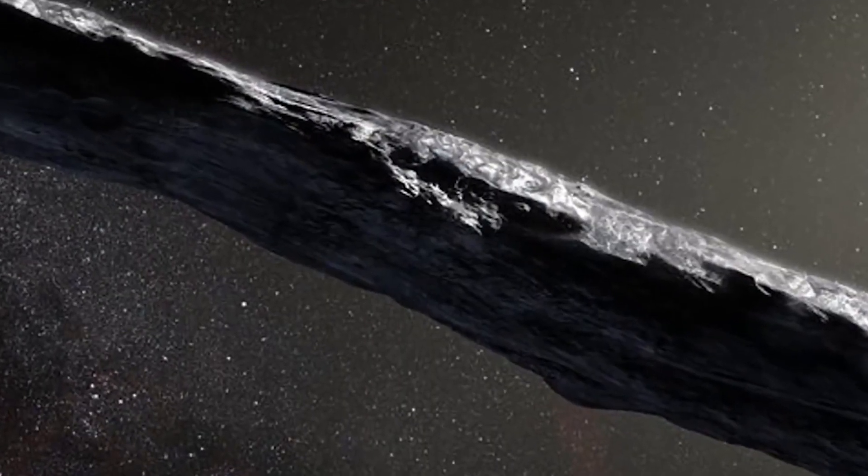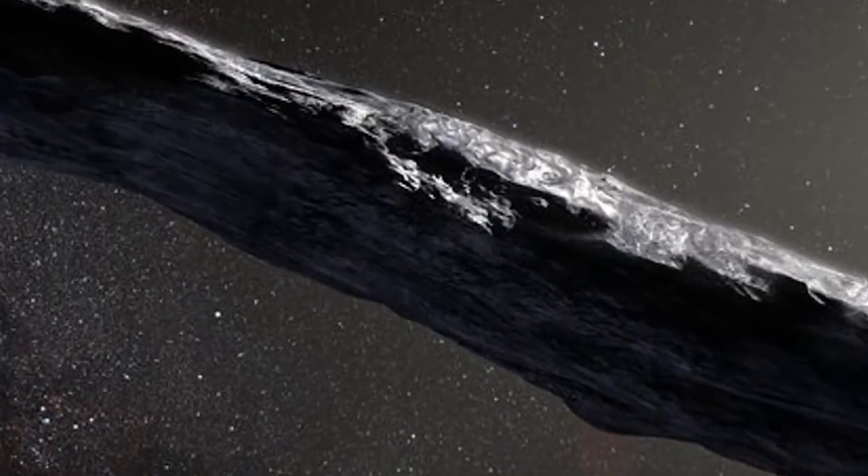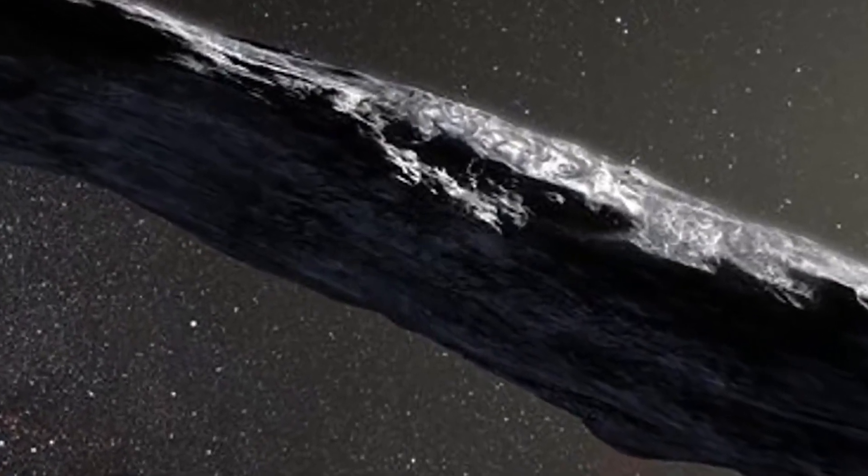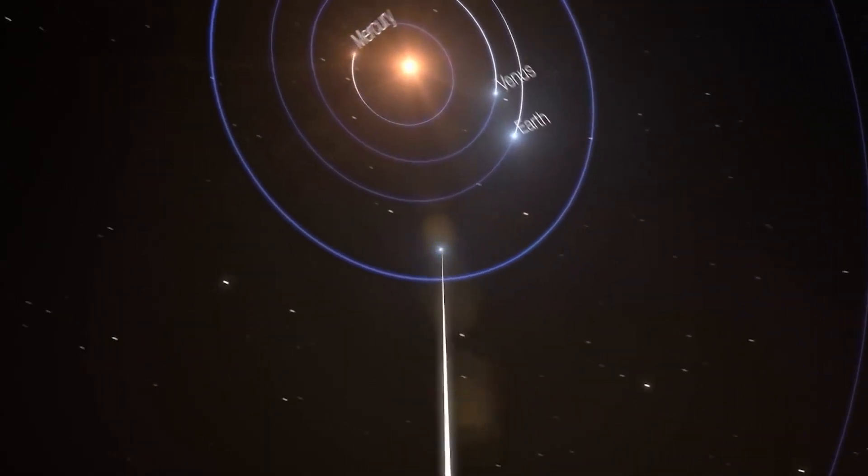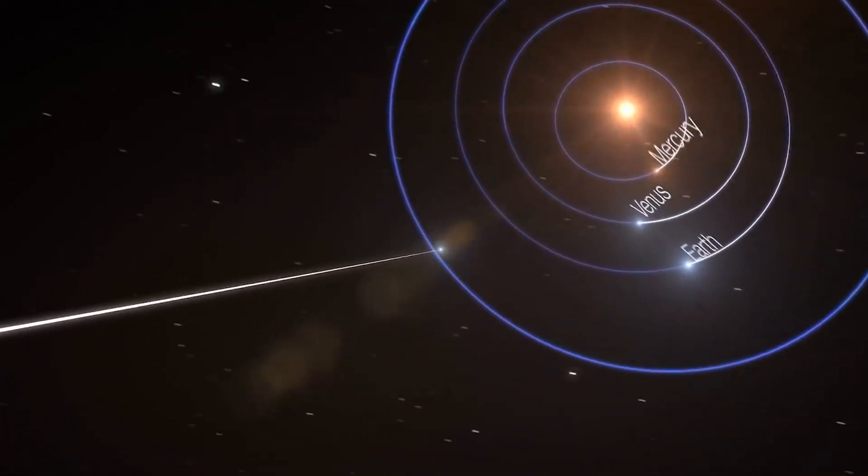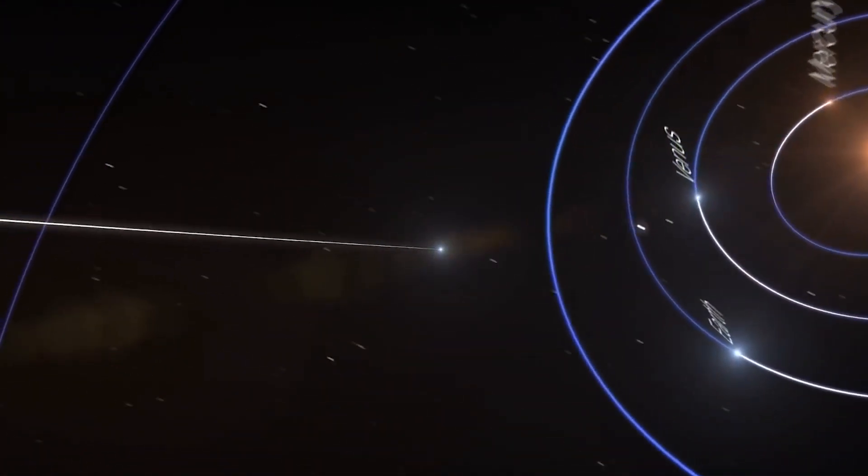It was the very first object that visited our vicinity in the solar system from outside the solar system. It moved too fast to be bound to the sun, the very first object that we have found coming to us from interstellar space, from other places.